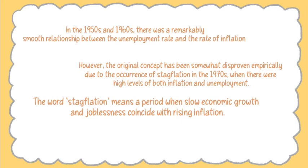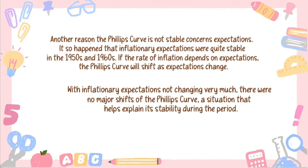In the 1970s, both demand and costs were varying, so no obvious relationship between the unemployment rate and the inflation rate was appearing. Another reason the Phillips Curve is not stable: expectations. It so happened that inflationary expectations were quite stable in the 1950s and 1960s. If the rate of inflation depends on expectations, the Phillips Curve will shift as expectations change. For example, if inflationary expectations increase, the result will be an increase in the rate of inflation even though the unemployment rate may not have changed. In this case, the Phillips Curve will shift to the right. If inflationary expectations decrease, the Phillips Curve will shift to the left. There will be less inflation at any given level of the unemployment rate.